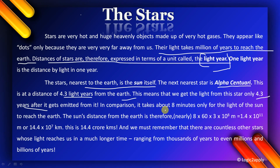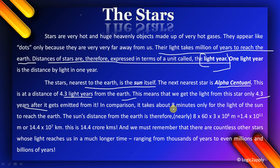In comparison, it takes about 8 minutes only for the light of the Sun to reach the Earth, whereas Alpha Centauri's light takes 4.3 years.